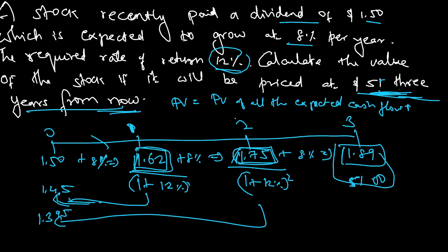This comes to 1.395. Then the third one is I need to add this first. This comes to 52.89 and I will discount it for 3 years.